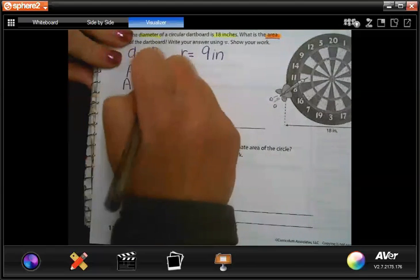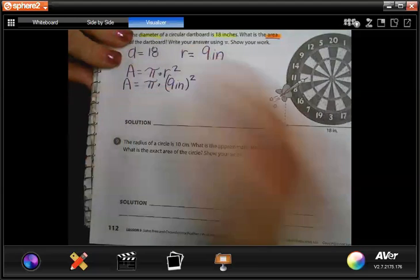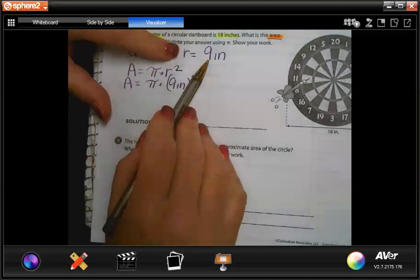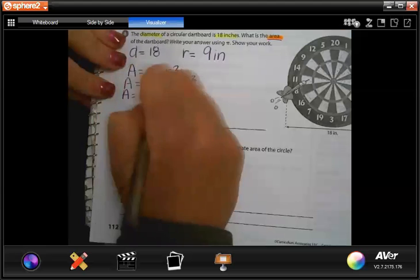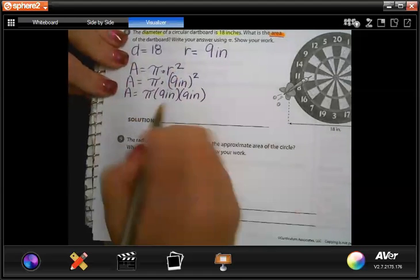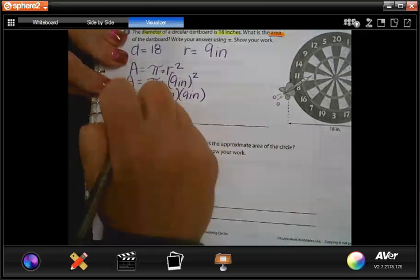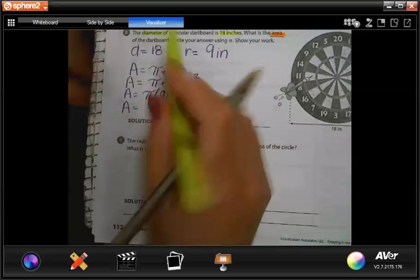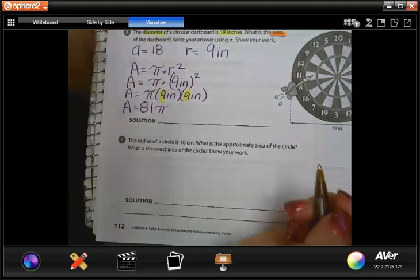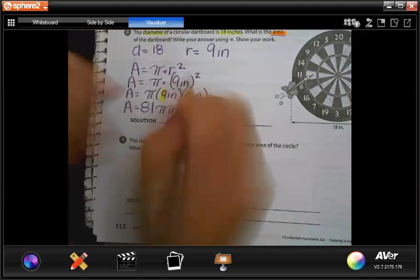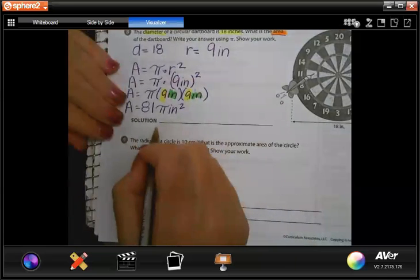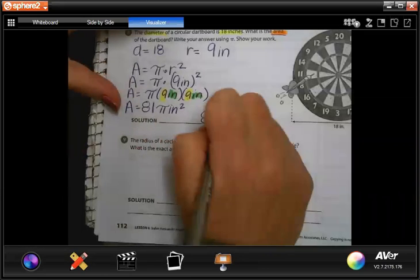Area equals pi times nine inches squared. So all I did is I took out my r and I plugged in what the value of my r was. And now we're gonna solve it. So it's still pi, radius squared is nine inches times nine inches. Well, nine times nine is 81, not 18 people. Don't get that confused, please. So the first thing I'm gonna do is I'm gonna multiply the numbers. Nine times nine is 81. And then comes my pi symbol and finally my label. And since I'm multiplying inches times inches, that's why it's inches squared.